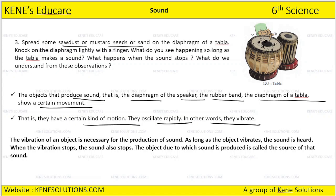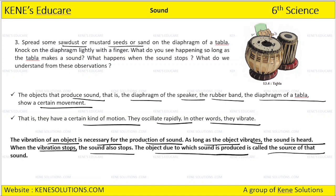When you strike the tabla, the stretched membrane starts vibrating. So vibrations of an object are necessary for the production of sound. As long as the object vibrates, the sound is heard. When the vibration stops, the sound also stops. The object due to which sound is produced is called the source of that sound. The tabla is a source of sound — the stretched membrane is responsible for creating sound because it creates vibrations. Vibrations are responsible for sound.